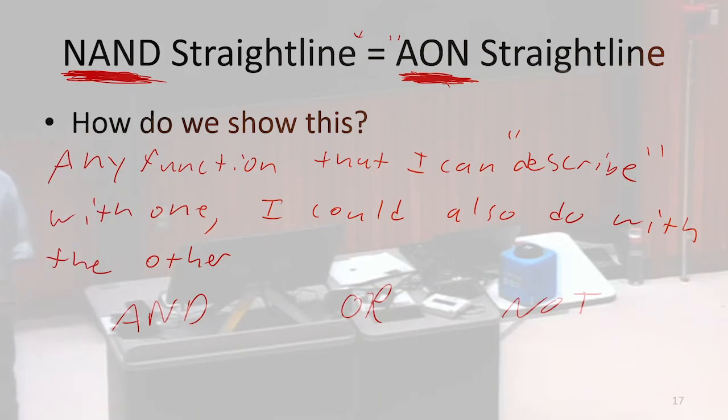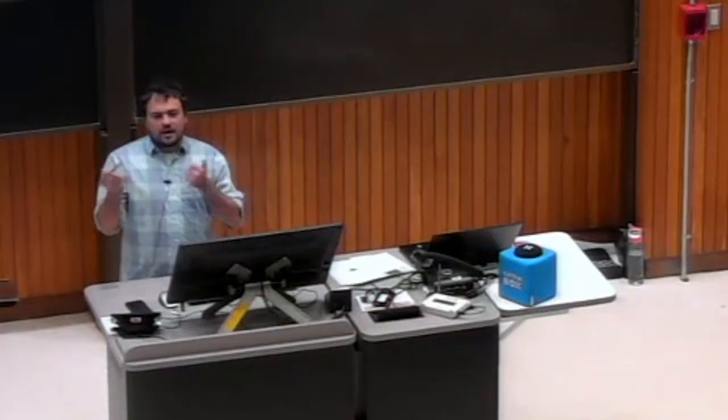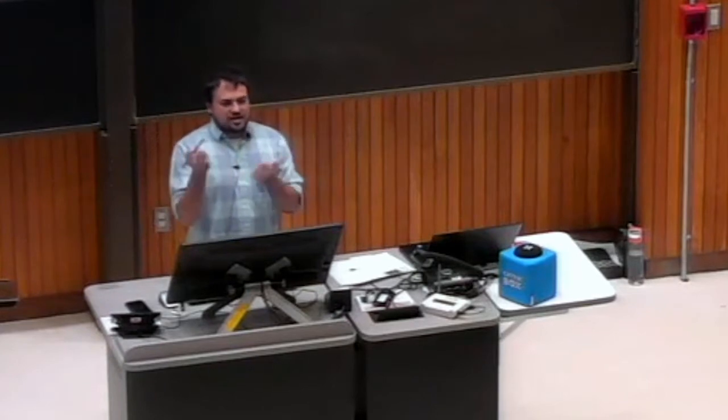Kind of like in order to show that two sets were the same size, you wanted to find a bijection in between them, some sort of function that's going to map both ways. We want to find a conversion that's going to map both ways between these two. If we can convert any NAND program to an AND, OR, NOT program, that doesn't guarantee us that there wasn't some AND, OR, NOT program that was out there that I couldn't have written with NANDs. So in order to prove that they are exactly equivalent to one another, we need to show kind of this two-directional translation.